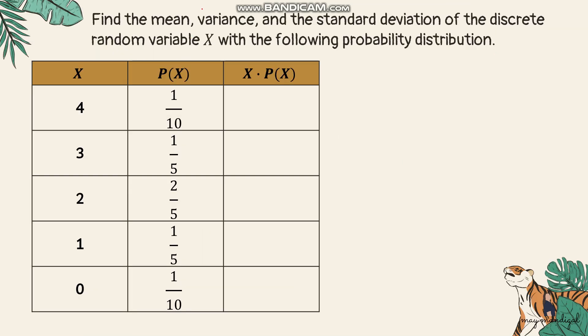Let's find the mean, variance, and standard deviation of a discrete random variable x with a given probability distribution. We have columns for x, p(x), and the product x·p(x). Since probabilities are given as fractions, we convert them to decimals: 1/10 = 0.1, 1/5 = 0.2, 2/5 = 0.4. Now we multiply each value of x by its corresponding probability.